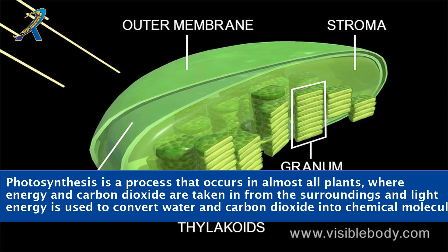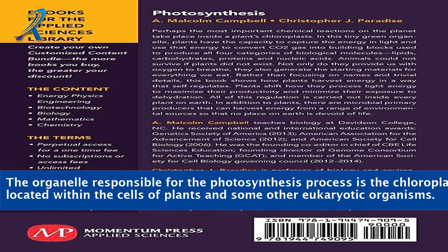Photosynthesis is a process that occurs in almost all plants, where energy and carbon dioxide are taken in from the surroundings and light energy is used to convert water and carbon dioxide into chemical molecules. The organelle responsible for the photosynthesis process is the chloroplast, located within the cells of plants and some other eukaryotic organisms.